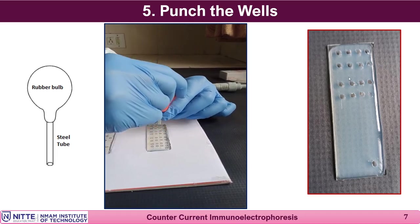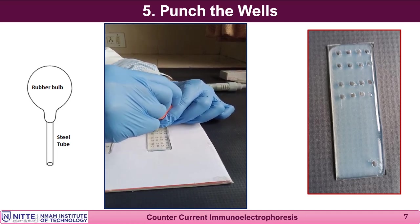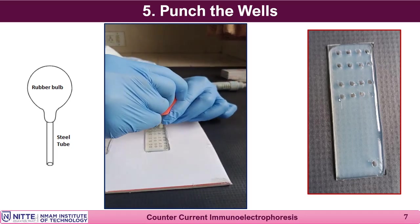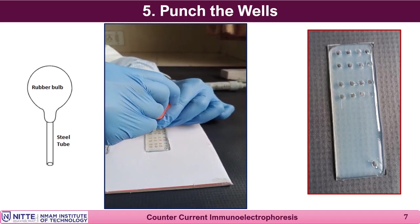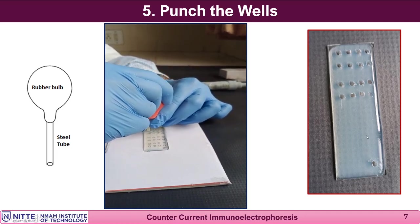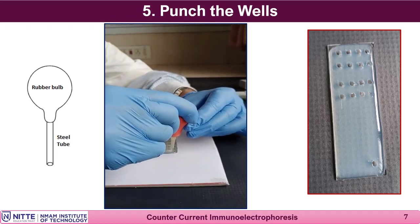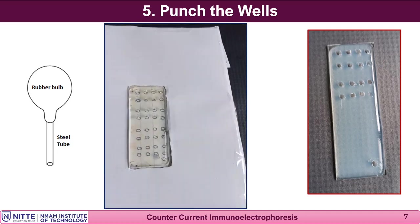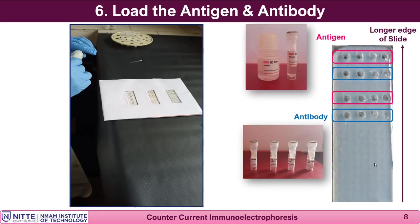Dedicate the left-hand side wells to the antigen and the right-hand side wells to the antibody. Punch one extra well on one corner of the slide, because after punching the entire slide it will look identical on both sides. To avoid confusion when connecting the antibody side well to the positive pole, that corner with the extra well should be connected to the positive pole.